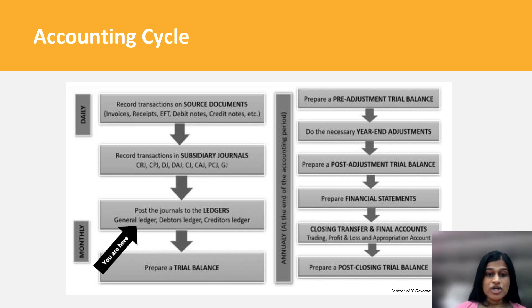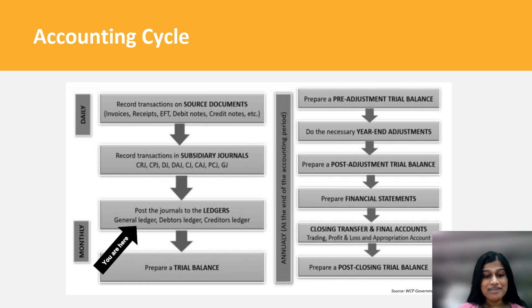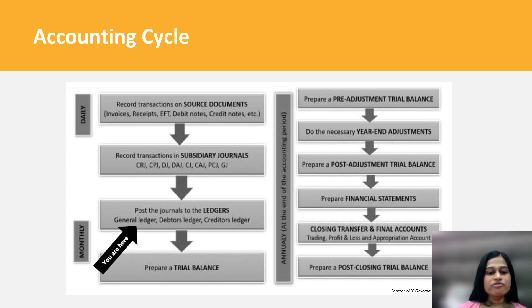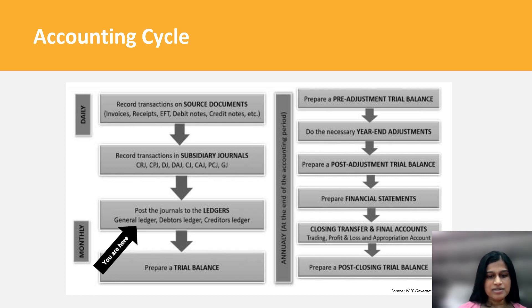You record these transactions in subsidiary journals such as the CRJ, CPJ, DJ, debtors allowance journal, and creditors journal — these are the subsidiary journals done in Grade 10 and Grade 11. Thereafter you post the journals to the ledgers, which is your general ledger, your debtors' ledger, and your creditors' ledger. You will then prepare a trial balance, and this is where we will be going on to in our next video lecture.